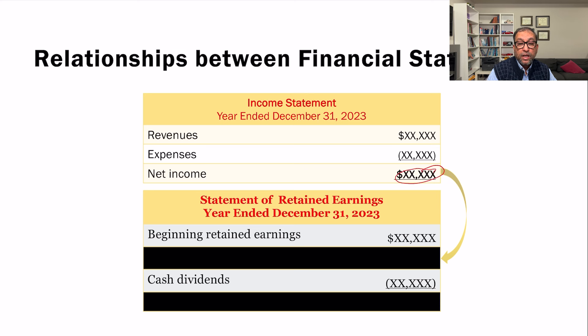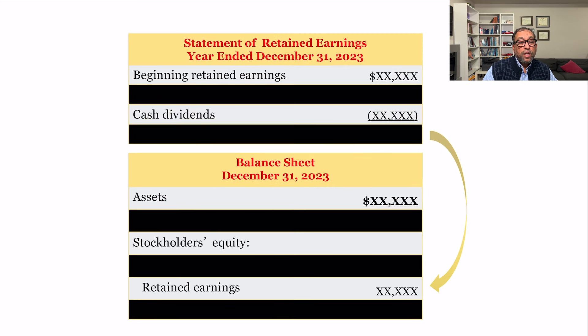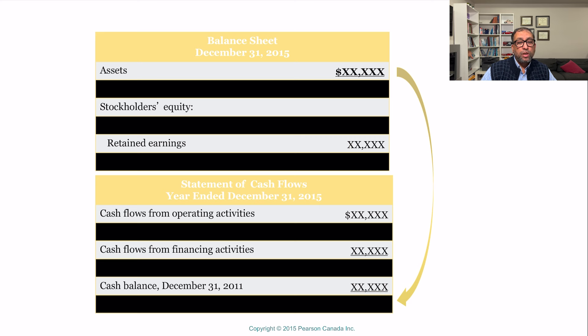In the income statement, we calculate net income, which is then reported in the statement of retained earnings. The ending retained earnings balance from that statement is then reported in the balance sheet. The cash balance from the balance sheet is then reported in the statement of cash flows. This is how data flows from one statement to another, establishing the required sequence.